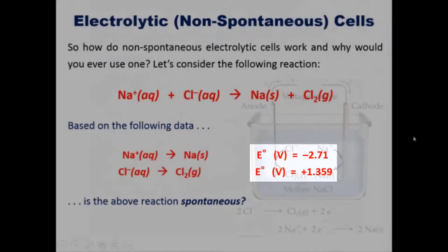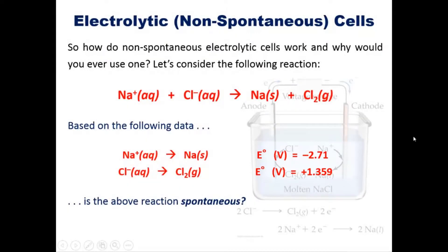We can see that to determine this, all you have to do is add these two values: negative 2.71 and positive 1.359. You'll notice that if you do that, you end up getting a negative overall value. Because it's a negative overall value, the answer is no. This process would not be spontaneous.